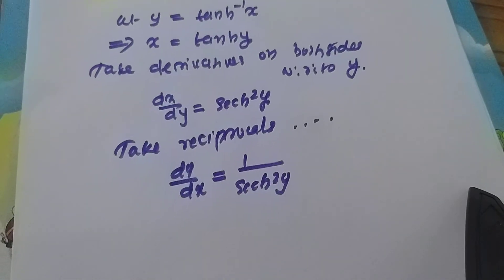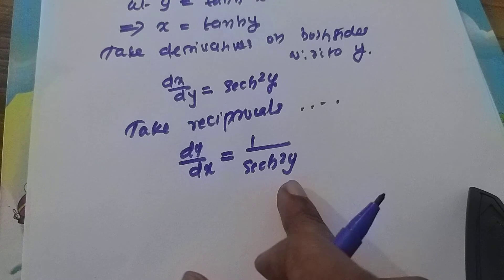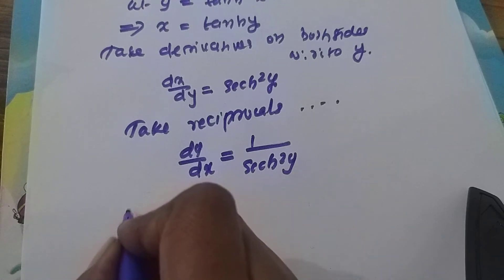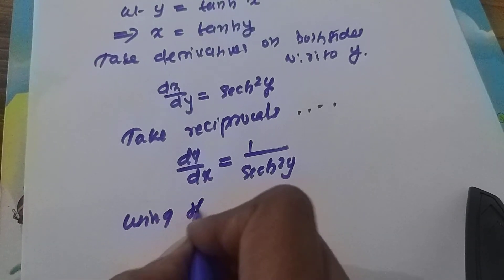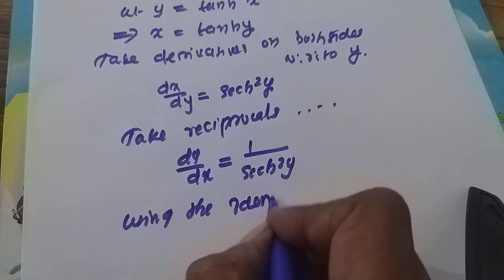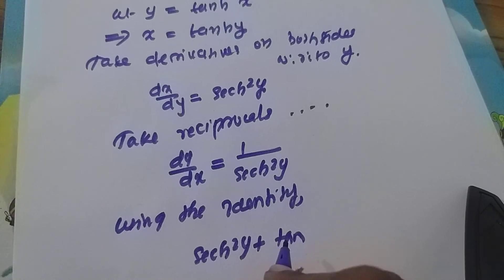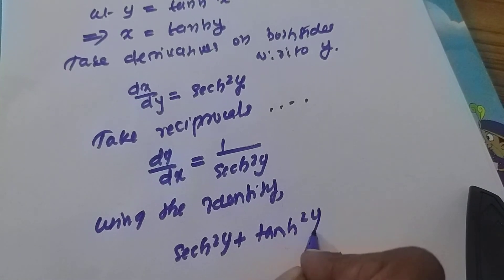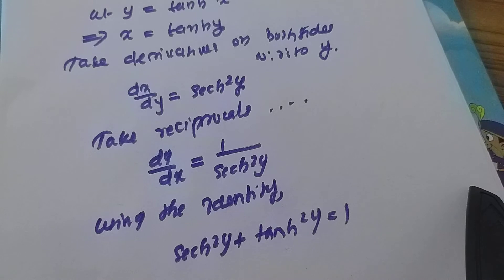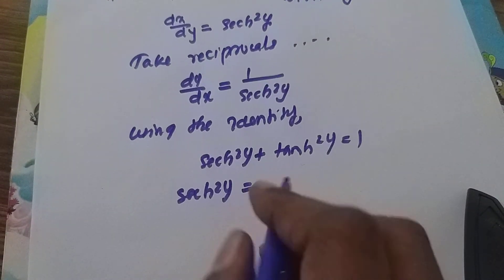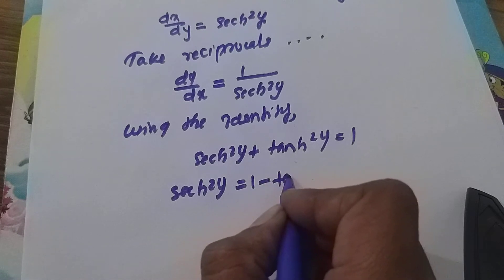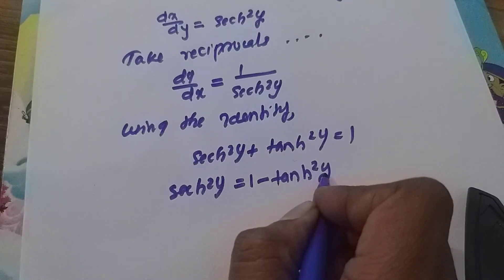Next, using the identity sech squared y plus tanh squared y equals 1, we get sech squared y equals 1 minus tanh squared y.